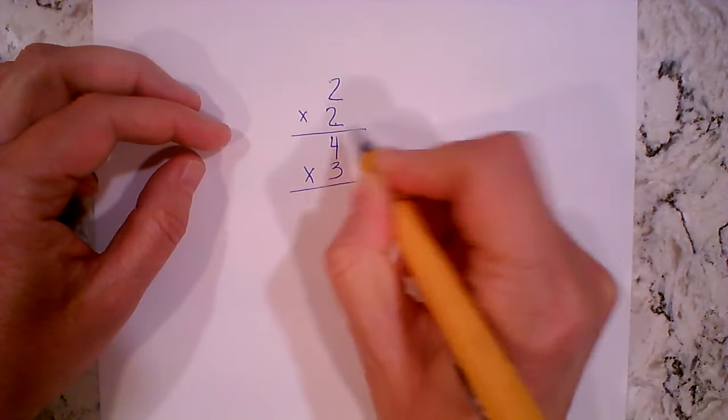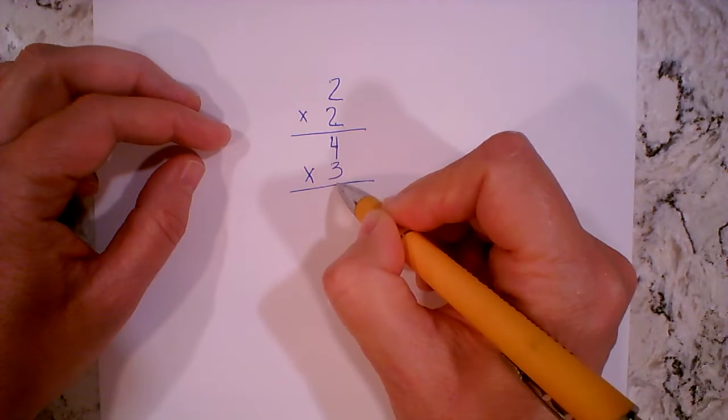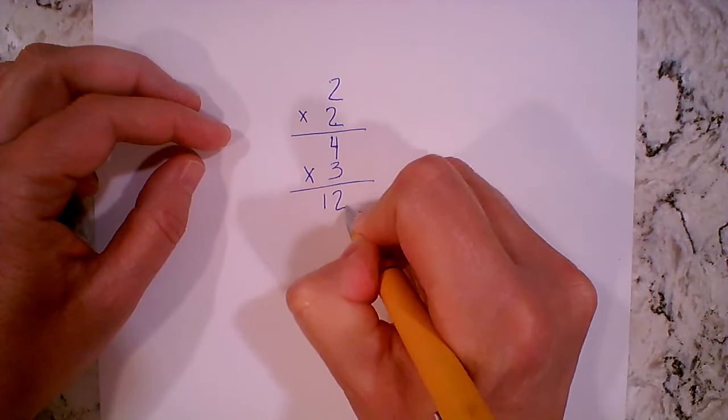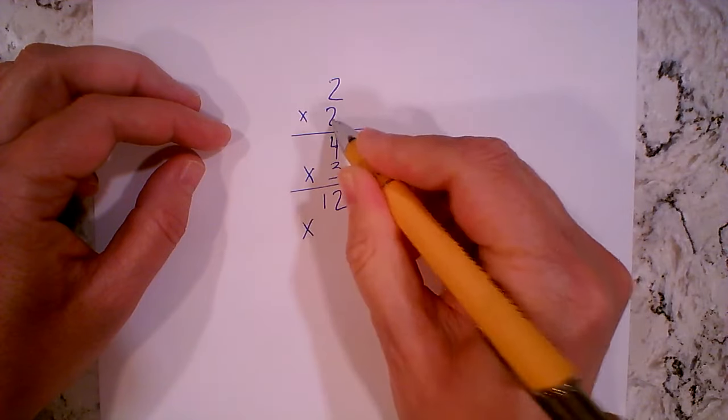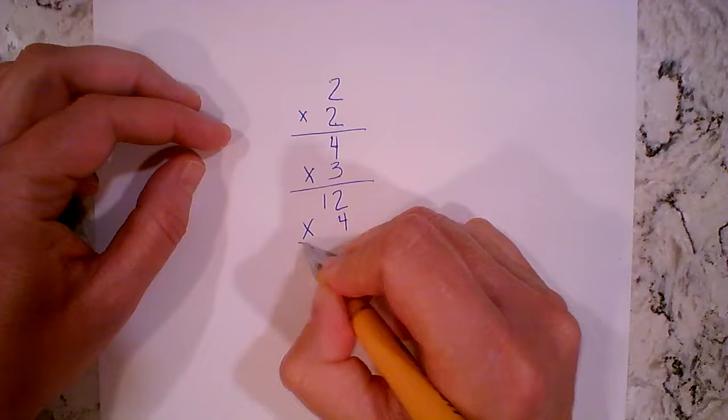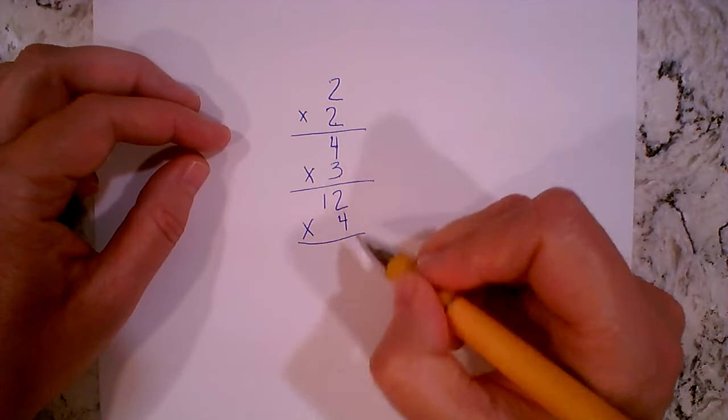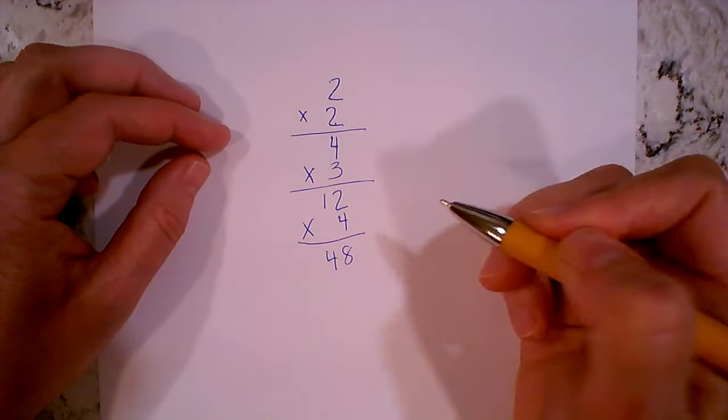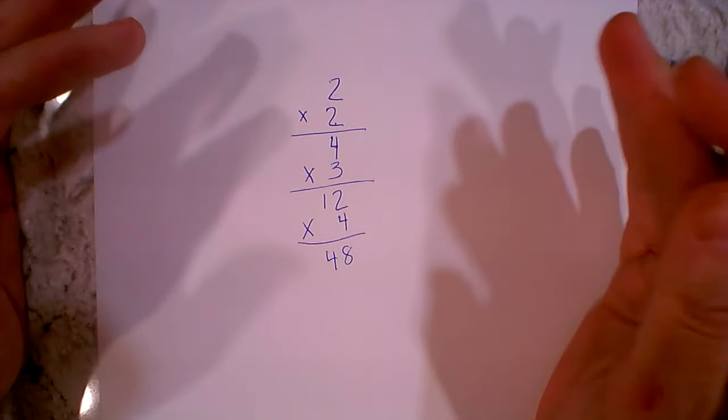That would be four times three, so we take the result and then we multiply that by three, which is twelve. And then the next one we have two, three, and then four. We just follow along and that would be 48. Now let's go back and do the division.